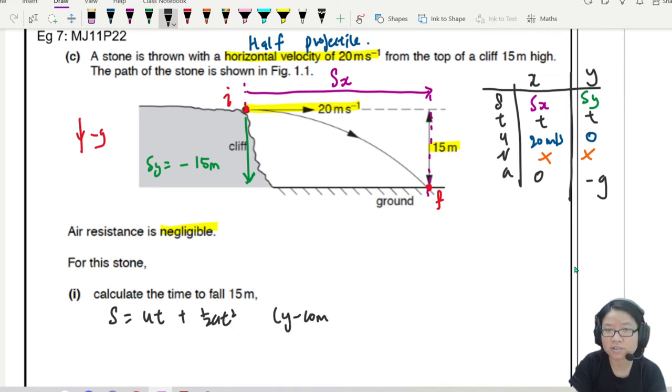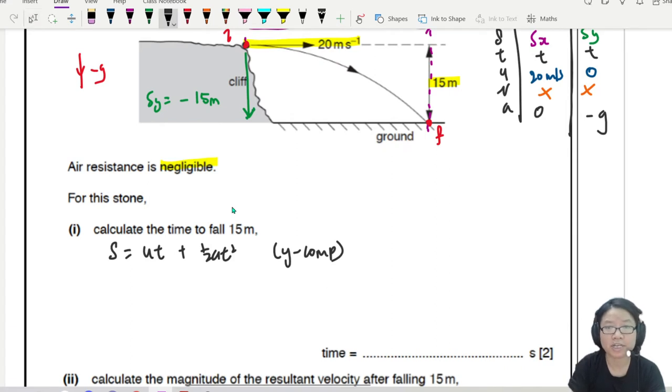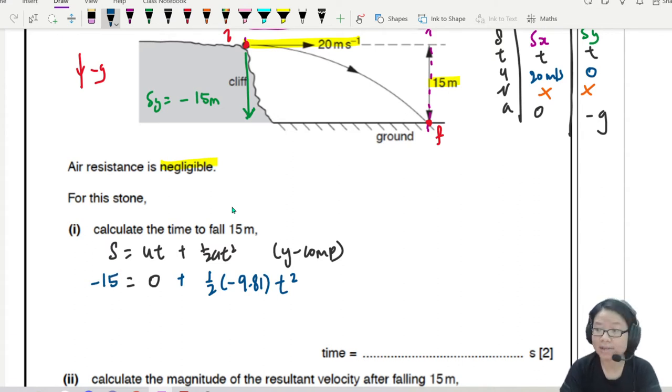So equation with no V would be S is UT plus half AT square. I'll just remind myself that this is for the Y component. So for the Y component, the initial speed is zero. Because when you fall off the cliff, you only have horizontal velocity. And then this is negative G or negative 9.81. What is the time? You are looking for time, square. And then the displacement is negative 15. Notice that if you don't use the same sign, then you will get a negative T square, which means you cannot square root. So if I press my calculator, I'll get 1.748. So I guess 1.75 second.